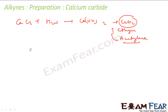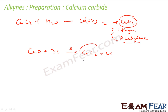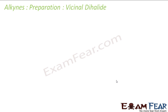To prepare Ca(OH)₂, what you can do is take CaO — quick lime — and heat it. You get Ca(OH)₂ plus carbon oxide. This Ca(OH)₂ you can use to prepare the alkyne.